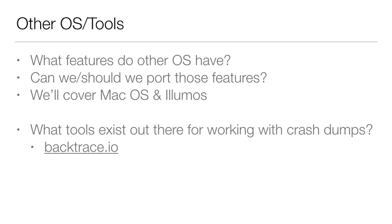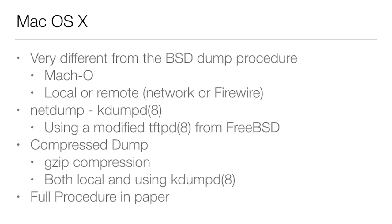Other OSes and tools: what features do other OSes have that we might want in FreeBSD? I'll cover Mac OS and Illumos, plus backtrace.io as an adjacent tool. OS X is very different from the BSD core dump procedure. The output format is Mach-O, not ELF. The default for OS X is remote core dumps — net dumps — though local dumps are possible too. You can dump over the network or over FireWire. NetDump works using a program called kdumpd, which is a modified tftpd from FreeBSD. Both local and remote dumps are GZIP compressed.